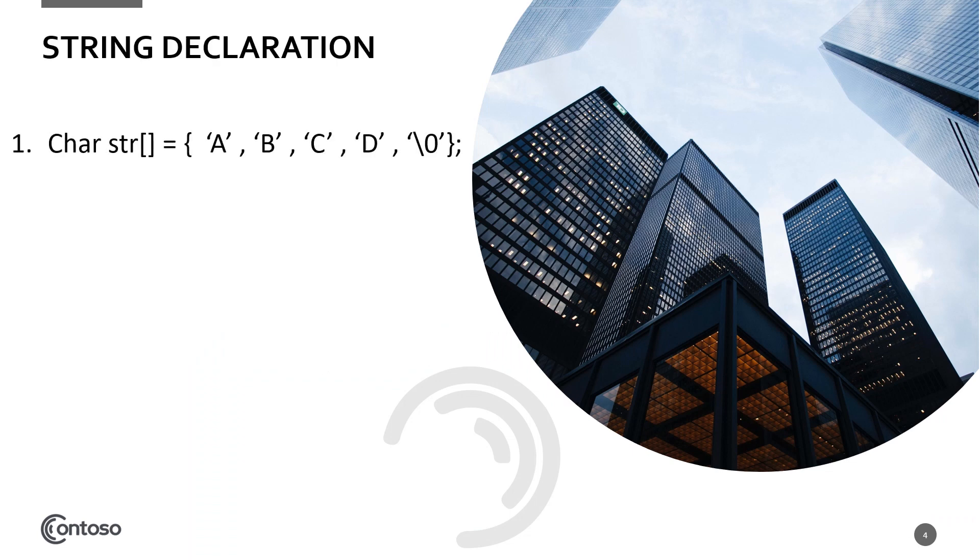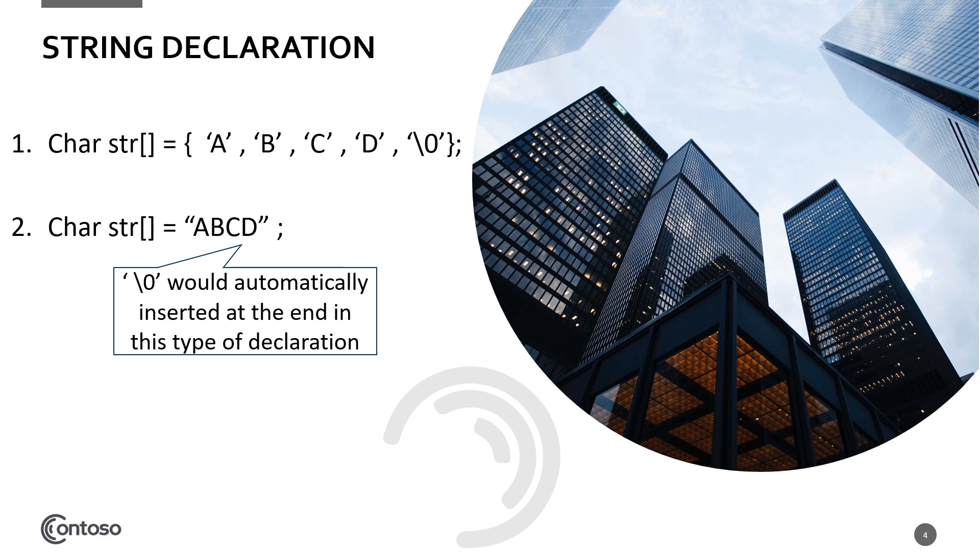Now we will discuss string declaration. Char str ABCD backslash 0, which is null character, is the first one, and second one is char str equals ABCD. Here, null character would automatically be inserted at the end in this type of declaration. We have to remember one thing is that in string declaration, we always use char as a data type, not int float and other data types, because string is a character array, so we will always use char here.